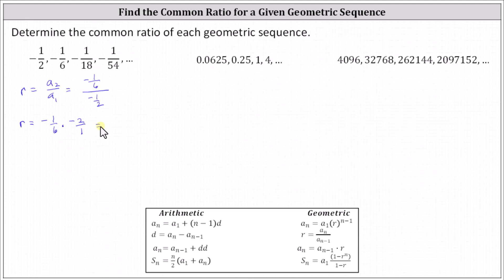Simplifying before multiplying, notice six and two share a common factor of two. There are three twos in six and one two in two. A negative times a negative is positive, which indicates the product is positive one third. The common ratio r equals one third.